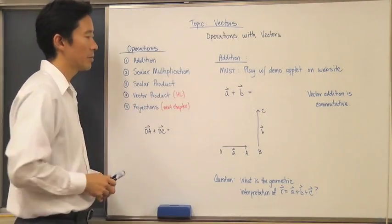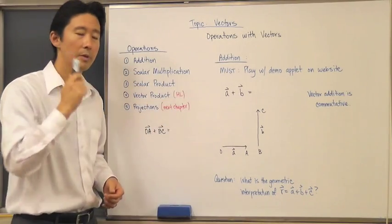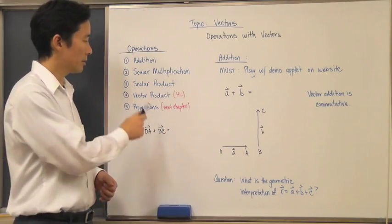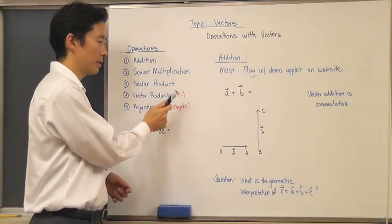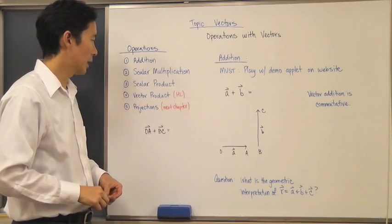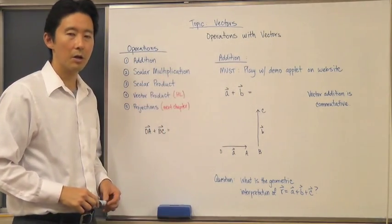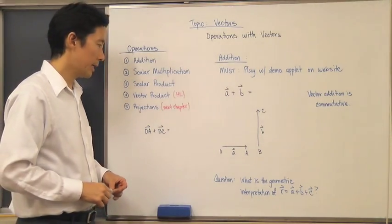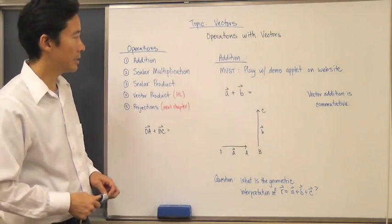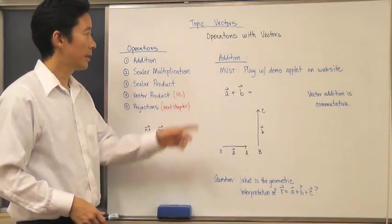You also have scalar multiplication, and you have the scalar product, which is something that is completely new to all of you. We're also going to talk about the vector product next year when we actually start the higher level course. We're also going to take a look at something called projections, which we'll talk about a little bit later in the next chapter. So let's go ahead and start with the first one, which is addition.